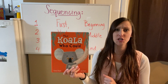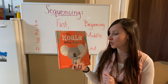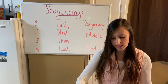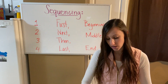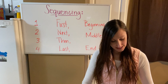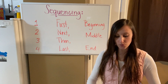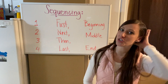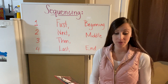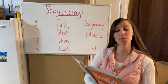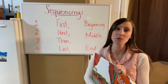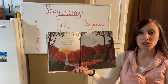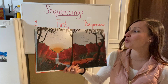Without further ado, The Koala Who Could by Rachel Bright. This is a fairly new story — 2017. It's a great book, and also an inspirational story. If you're ever scared to do something, kind of like this koala. I hope you guys enjoy this story. Remember, when you sequence, I only want the most important things. Don't forget to look at the pictures because they are beautiful.